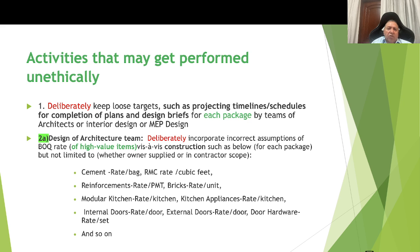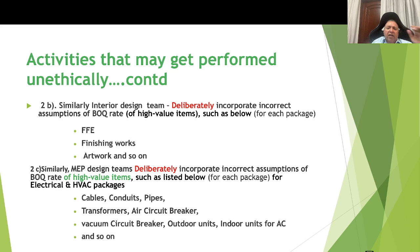These are just a few high-value items that contribute to project cost. Similarly, the interior design team may deliberately incorporate incorrect assumptions about rates for high-value FF&E items — that is, furniture, fixtures, and equipment used for interior design — such as lighting fixtures, tables, chairs, kitchen equipment, pantry equipment, finishing works like marble or tiles, interior linen and artwork of different variety and material. The MVP design function may also deliberately incorporate incorrect assumptions about rates for high-value items in packages such as electrical and HVAC — for example, projecting rates of cables, conduits, and pipes on the higher side, or rates for transformers, air circuit breakers, VCBs, and outdoor and indoor AC units on the higher side.